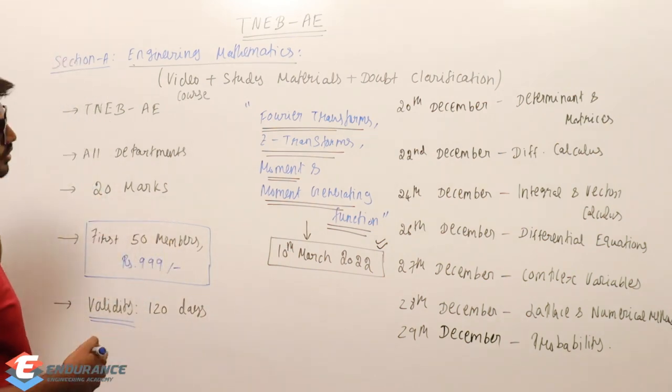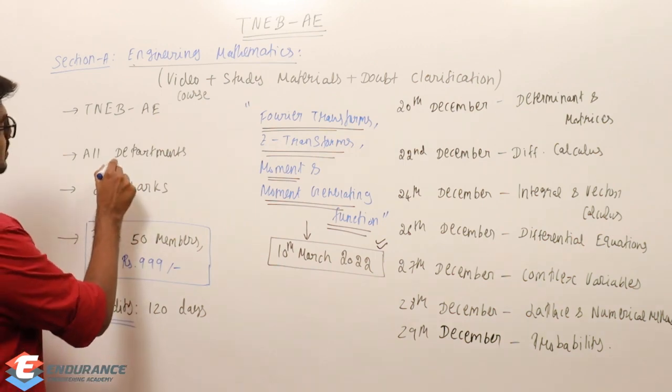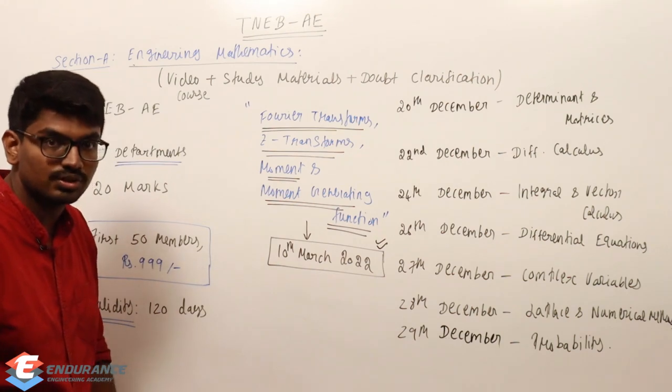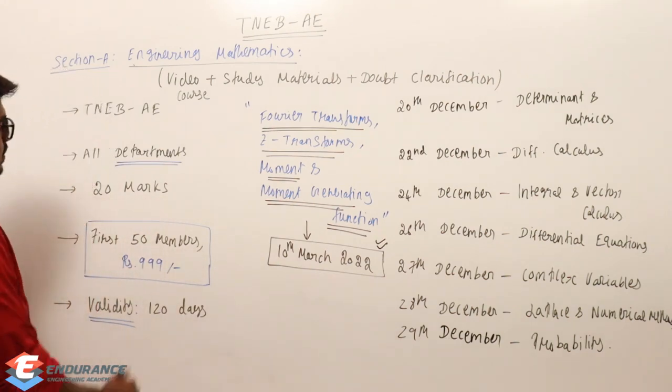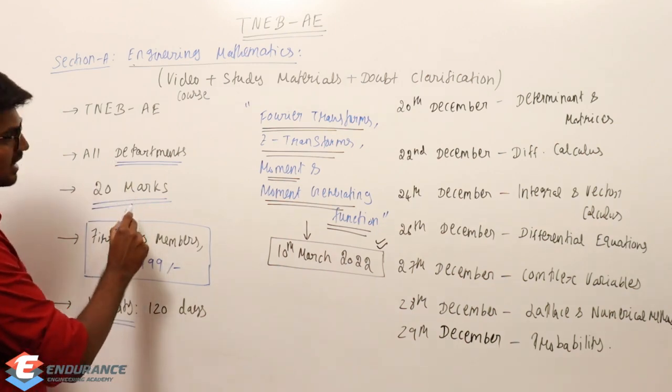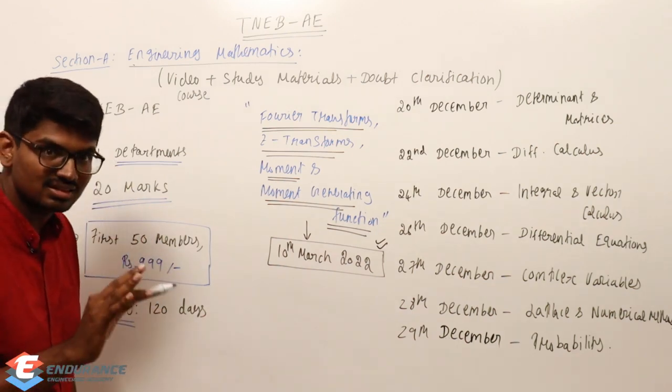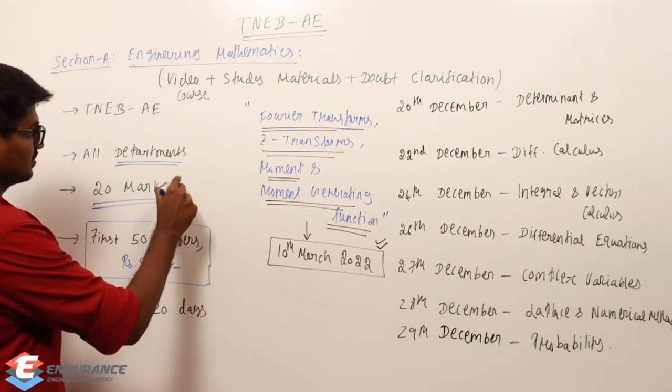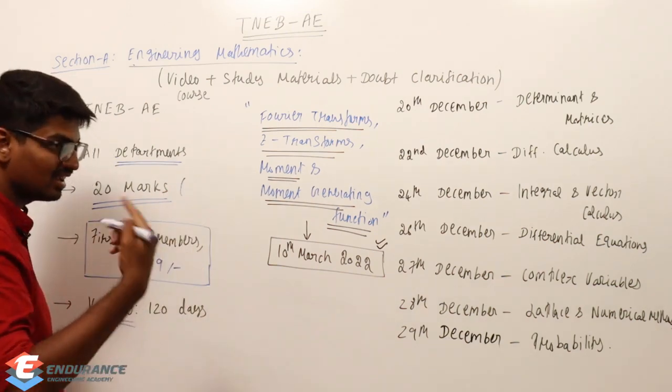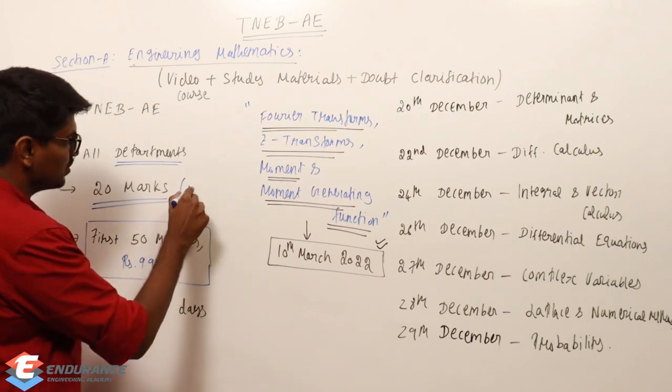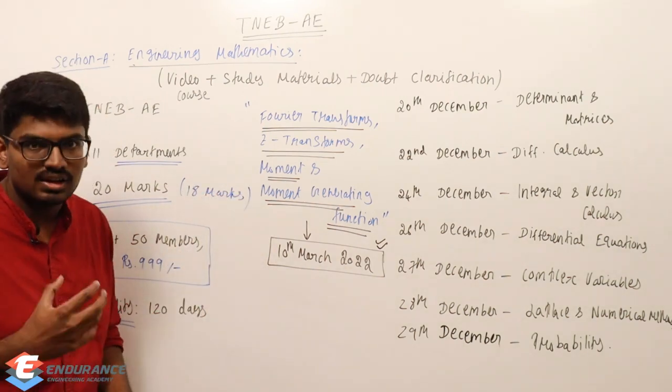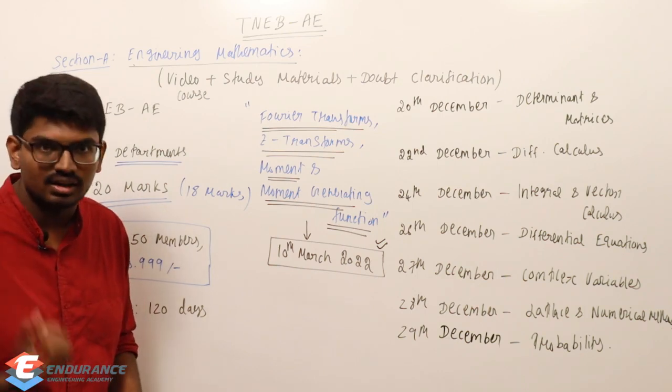And, in the course, TNEB AE of course, all departments. Because, the section A, is common for all the departments. So, it is for everyone. And, total marks, it is going to carry 20 marks. And, almost 20 marks. Almost. I am saying almost. I am not saying exactly 20 marks. Because, nobody can guarantee that. If I am saying exactly 20 marks. Almost 20 marks. 18. Around 18 marks, you will get more than 18 marks. But, in the course, it is useful.